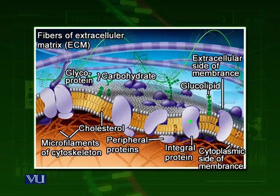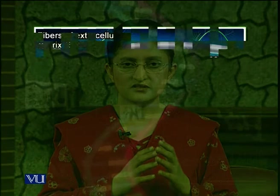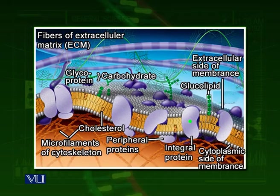These cytoskeletal elements attach to the peripheral proteins and on the other side they attach to different organelles — such as mitochondria, nucleus, or endoplasmic reticulum. They give support to those organelles because the cytoplasm is a fluid and organelles have to be kept at a particular location. They are placed on these locations with the help of the cytoskeletal elements, which are the fibers or ropes attached to the peripheral proteins. So the cell membrane gives support to the organelles through these cytoskeletal elements.